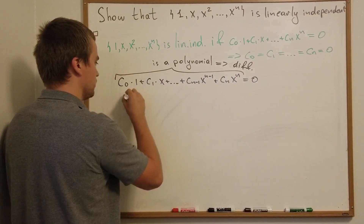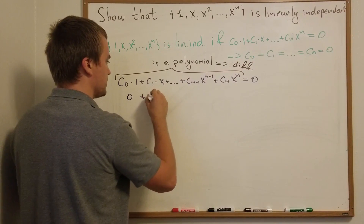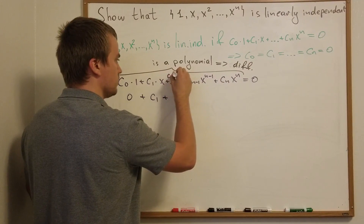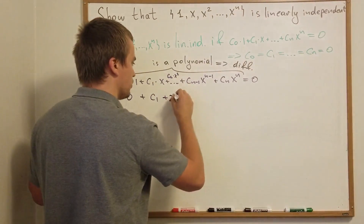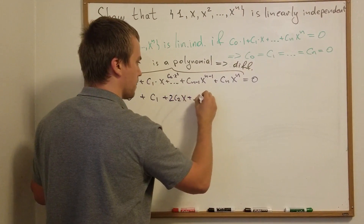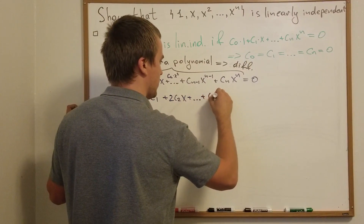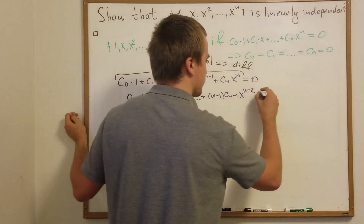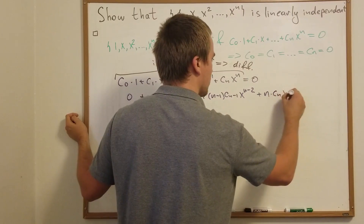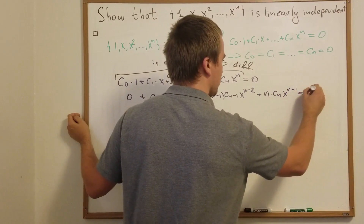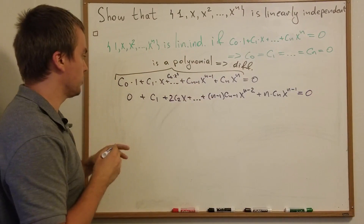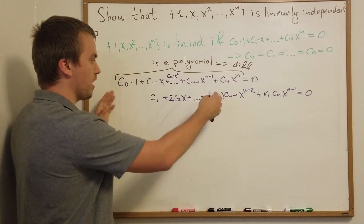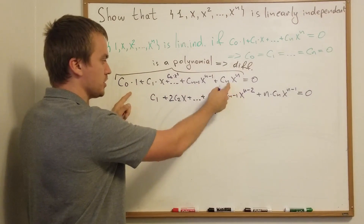After differentiating, the first term c0 is going to be 0. The second term is going to be c1. The next term: we had c2 times x^2, so when we differentiate we get 2c2 times x. Continuing: the next-to-last term gives (n−1)c_{n−1} times x^{n−2}, and the last term gives n·c_n times x^{n−1}, all equals 0. Now we can eliminate the 0 constant term, so the number of terms in our linear combination has decreased by 1.